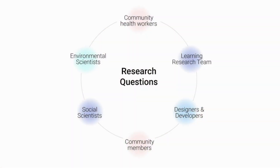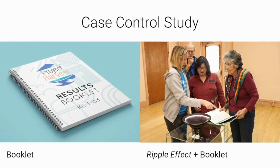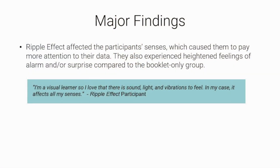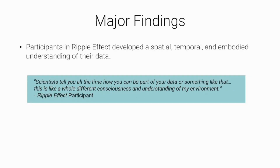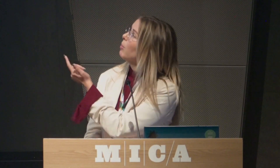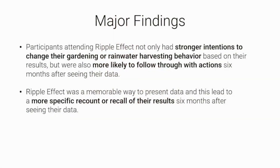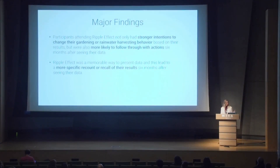We measured the impact this has on people. I worked with various scientists to do a case-control study — half the participants received results in a booklet, and the other half received the art installation plus the booklet, switching the next year. We found that the installation affected participants' senses, causing them to pay more attention to the data. They also developed a spatial, temporal, and embodied understanding of their data — talking about being part of their data, a different consciousness and understanding of their environment. They had stronger intentions to change their gardening or rainwater harvesting behavior, and followed through with those actions six months after seeing the data.